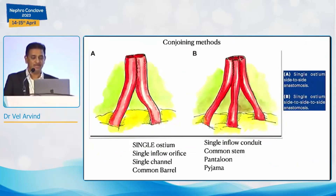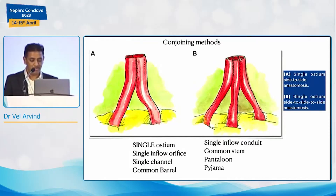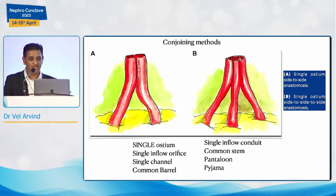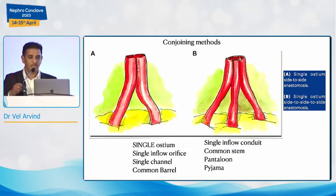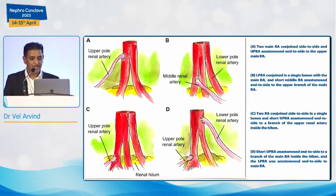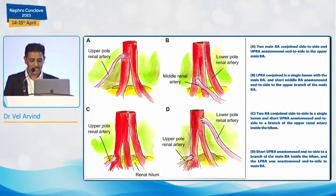For arteries we have choices: external iliac artery, internal iliac artery, deep inferior epigastric artery, and ureterus by the Lich-Grégoire method. Anastomosis choices include: two arteries straight to internal or external iliac; a piggyback where you make a small hole in the main renal artery; lower polar anastomosed to one segmental artery; or upper segmental — all these variations can be done. The conjoining methods have various names: single ostium, single inflow orifice, single channel, common barrel, single inflow conduit, common stem, pantaloon, or pyjama technique.